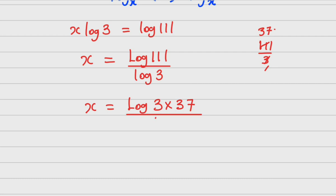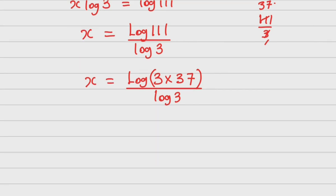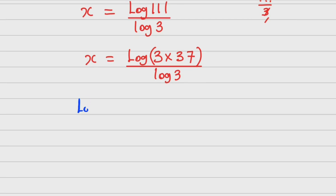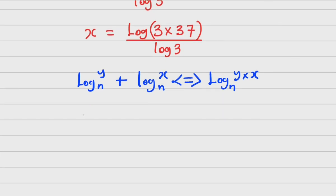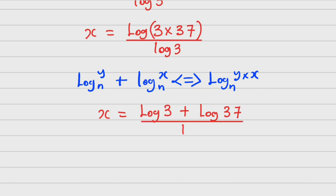Now remember there is another law among the laws of logarithms that states that if you have log y base n plus log x base n, as long as the bases are the same, it is written as log(y times x), base n. This goes vice versa. Because of that knowledge, x now equals log 3 plus log 37, all over log 3.